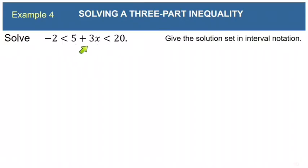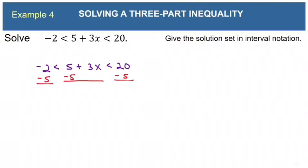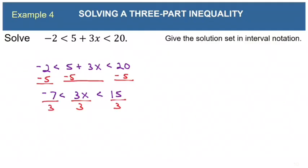All we want to do is isolate the x in the middle. Subtract 5 from the middle — and since we do that, we must subtract 5 from both end pieces as well. That gives negative 7 is less than 3x, which is less than 15. Now divide each piece by 3: that gives negative 7 thirds is less than x, which is less than 5.